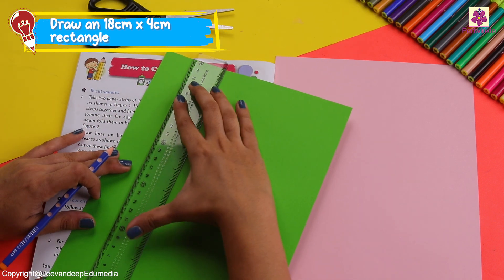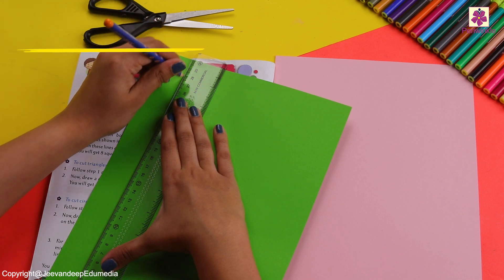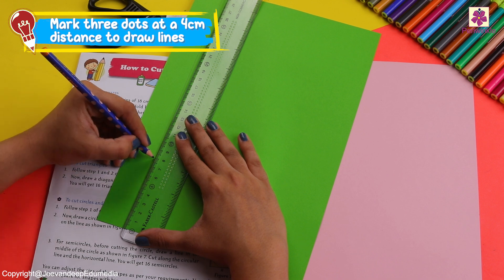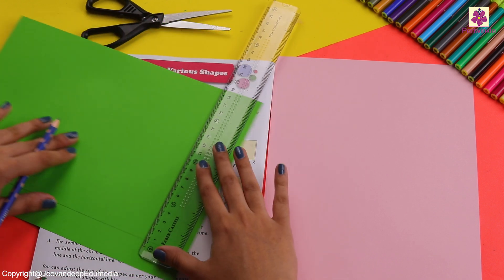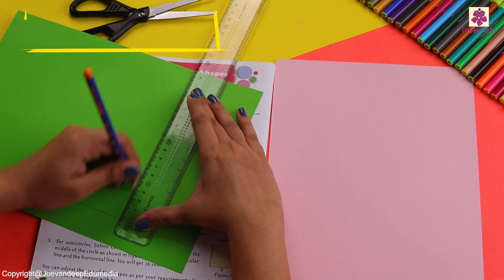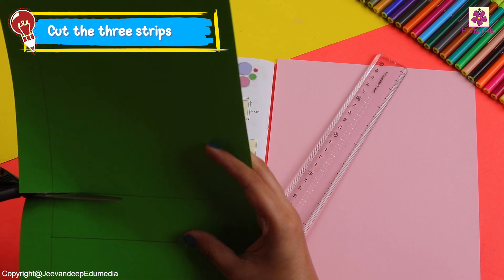Let's make these rectangles at first. We are going to make an 18 centimeter by 4 centimeter rectangle. We are going to cut three at first.